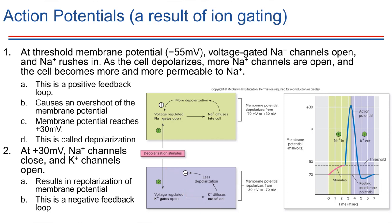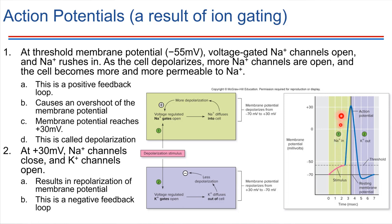All of this can be represented on a graph of an action potential, which we're going to become very familiar with. This whole series of events is called an action potential — how neurons send electrical signals. On this graph, membrane potential is on one axis and time is on the other. The cell starts at minus 70, its resting value. A stimulus must bring the membrane potential to the threshold of minus 55 millivolts to trigger the action potential. Once it starts, it's an all-or-nothing event.